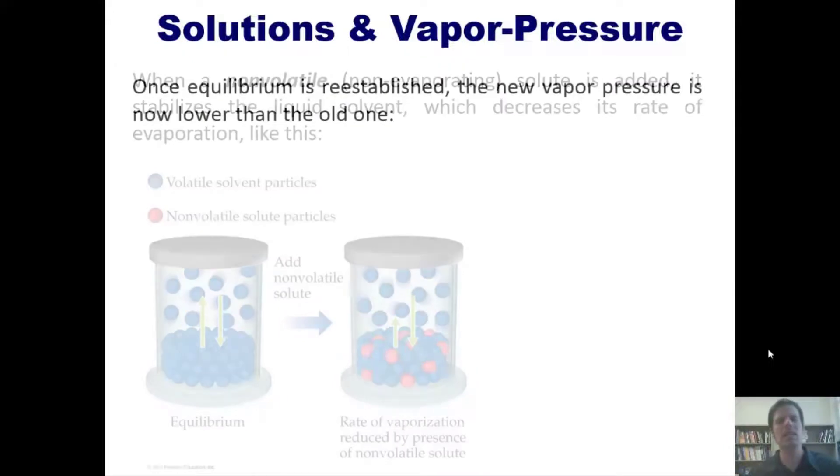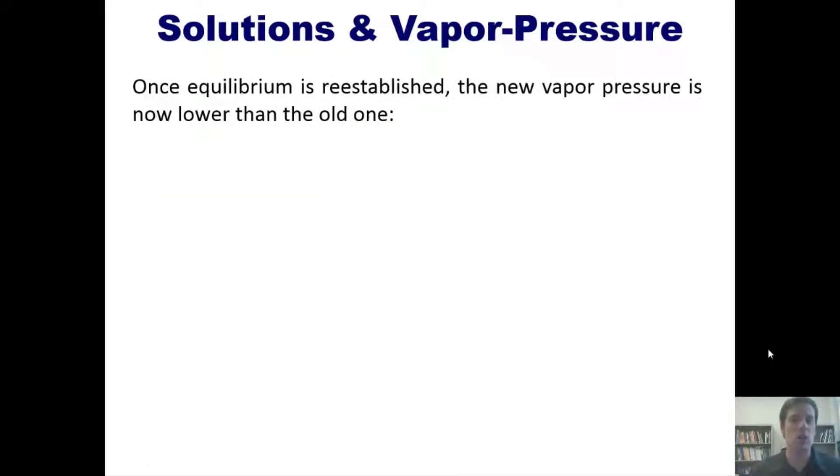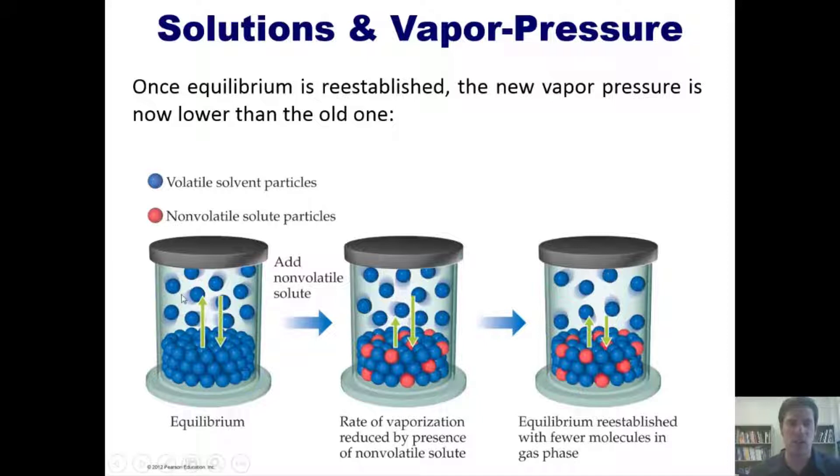Once equilibrium is established, the new vapor pressure is now lower than the old one. We can see that shown in this figure. I've got my volatile solvent evaporating and condensing back and forth in equilibrium. I add a solute that is not volatile; it decreases the rate until we reach a new equilibrium. You're welcome to pause the video and look at this figure closely until you've wrapped your head around the concept.